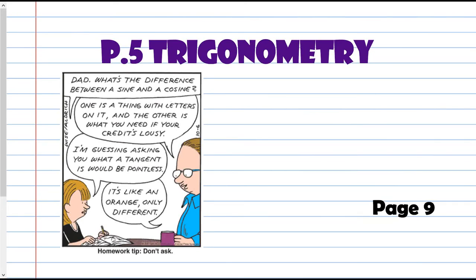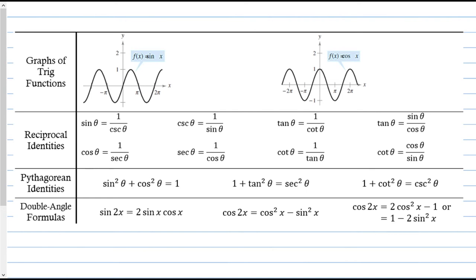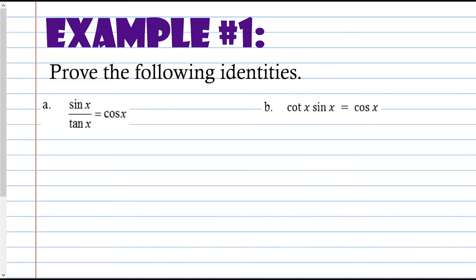P.5 Trigonometry — we're going to review mostly the unit circle and some trig identities. Here are the graphs of sine and cosine. Obviously there's tangent, cosecant, secant, but I've limited these notes to just these two. As a refresher, we have some reciprocal identities: sine equals 1 over cosecant, tangent equals sine over cosine, etc. The Pythagorean identities: sine squared plus cosine squared equals 1. And then double angle formulas — this one comes up a lot.